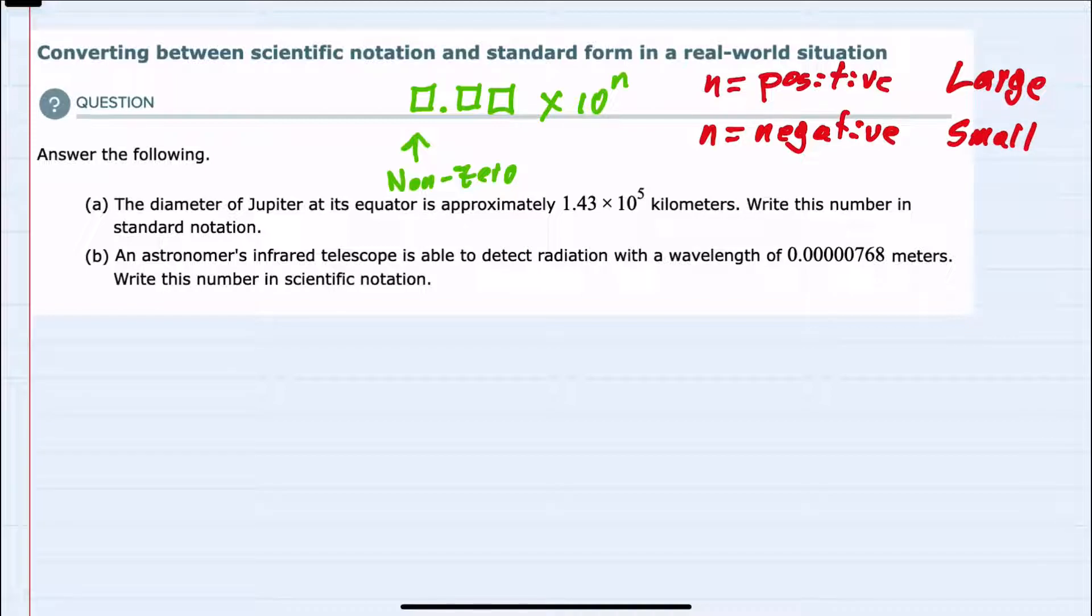Based on this, we can make the transition between scientific and standard notation by simply moving the decimal place. For the first example, A, we're told that the diameter of Jupiter at its equator is approximately 1.43 times 10 to the 5th kilometers, and we're asked to write this in standard notation.